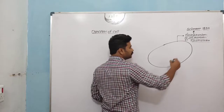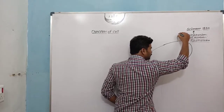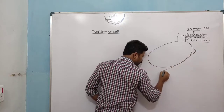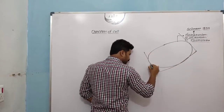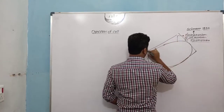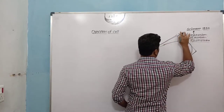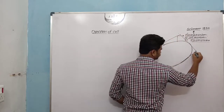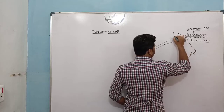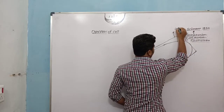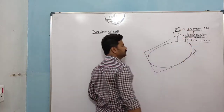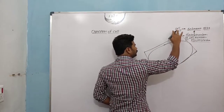Schwann also noted that in a plant cell, there is an additional boundary called the cell wall. So this structure is called the cell wall, and this structure was also identified by Schwann.